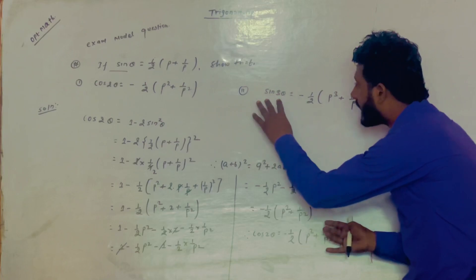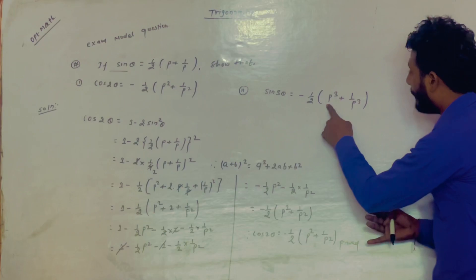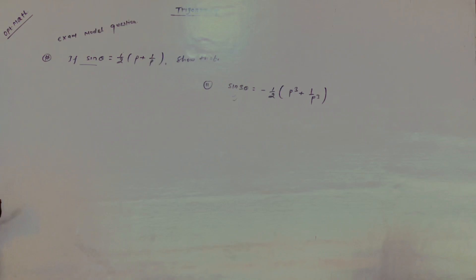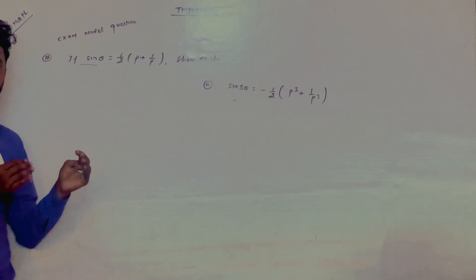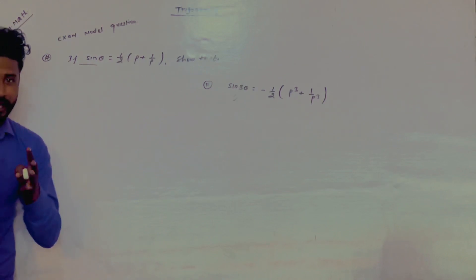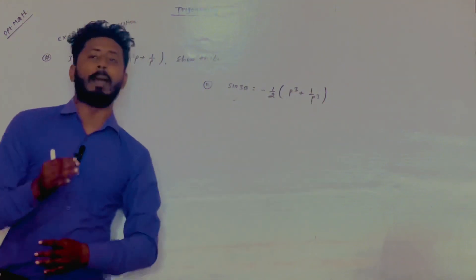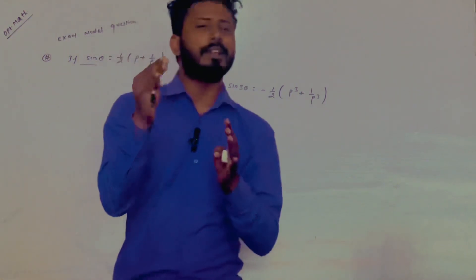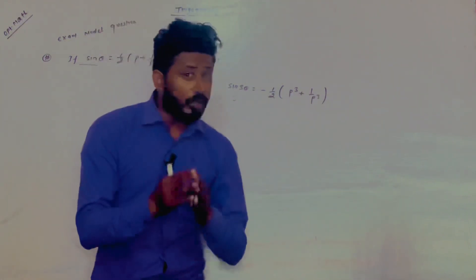Now we have proved cos 2 theta. Next, we have to prove sin 3 theta equals minus 1 by 2, p cubed plus 1 by p cubed. How do we do this? We just proved it using the cos 2 theta formula. Now for sin 3 theta, we need to prove minus 1 by 2, p cubed plus 1 by p cubed. This is quite easy — we just need to remember the sin 3 theta formula.